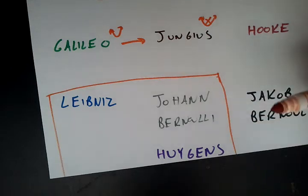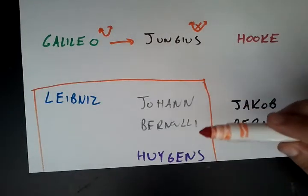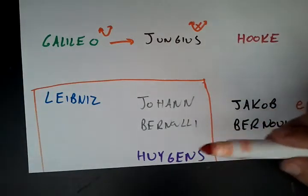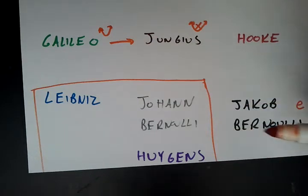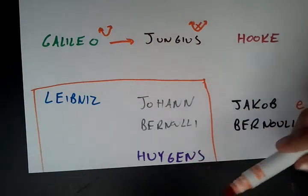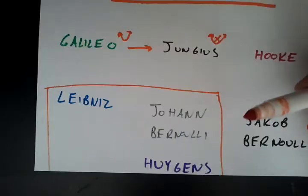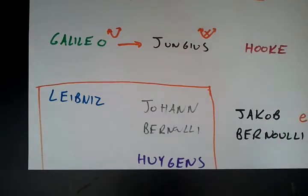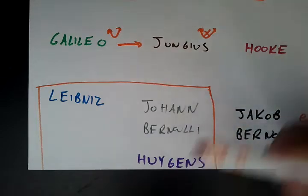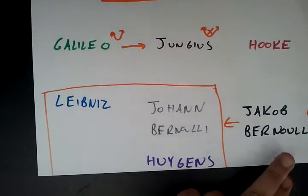Johann Bernoulli, which was the brother of Jacob Bernoulli, and he was best known for educating Euler in his youth. He was one of Euler's professors. And then also Huygens, who was best known for discovering rings of Saturn and stuff like that. And Leibniz, of course, we all know, he was the father, the inventor of half of calculus, along with Newton. They all found the equation of the catenary together in response to his challenge.